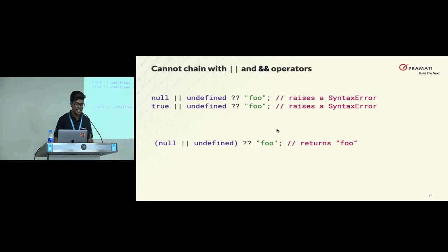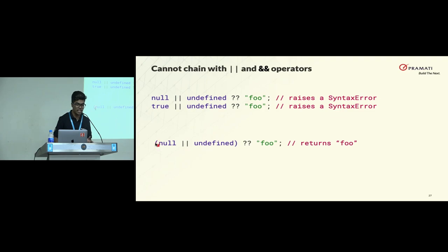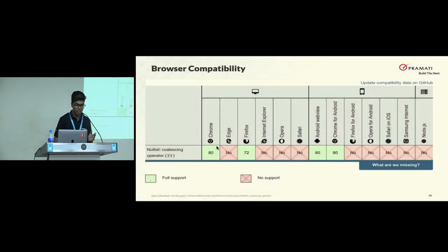There is a challenge with null coalescing — you cannot chain it with OR operators directly. You have to use circular brackets and then do the optional chaining if you want to combine them. Coming to browser compatibility, null coalescing is available in Chrome 80 and Firefox 72.